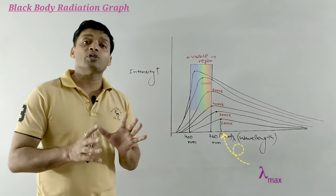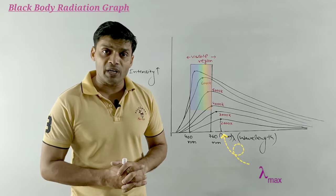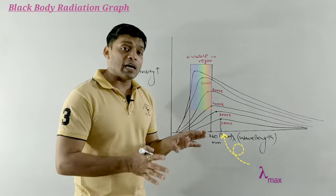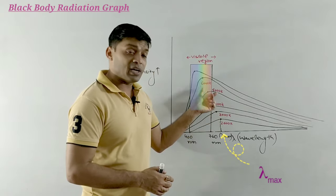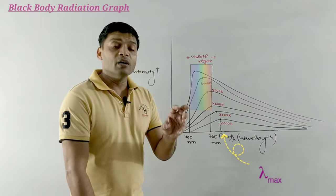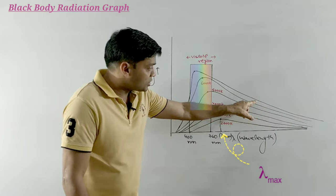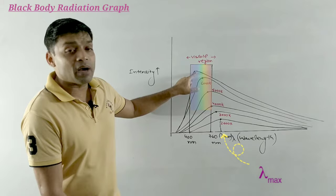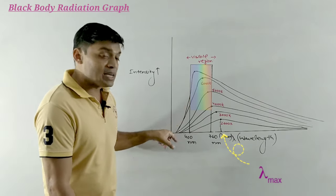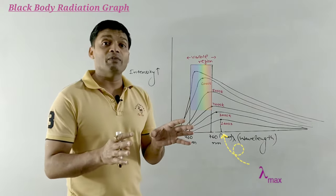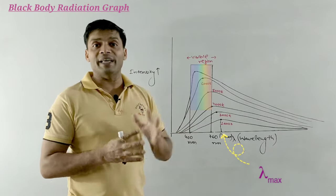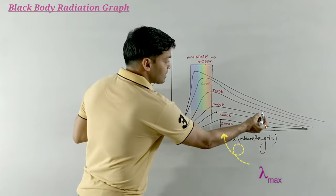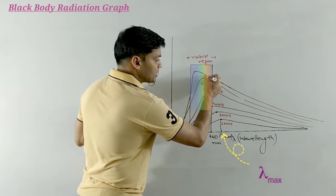This black body radiation graph was in contradiction to the classical wave theory. The classical wave theory was unable to explain this graphical pattern, because when we observe a black body at a particular temperature, the energy first increases to a maximum and then shows a dip. But according to the classical wave theory, which believes in the continuous radiation of energy, the graph should continuously rise as we shift towards shorter wavelengths — it should not show a dip after the peak.